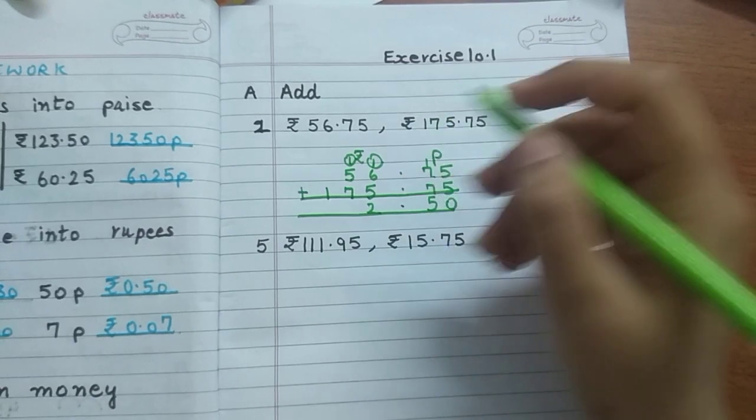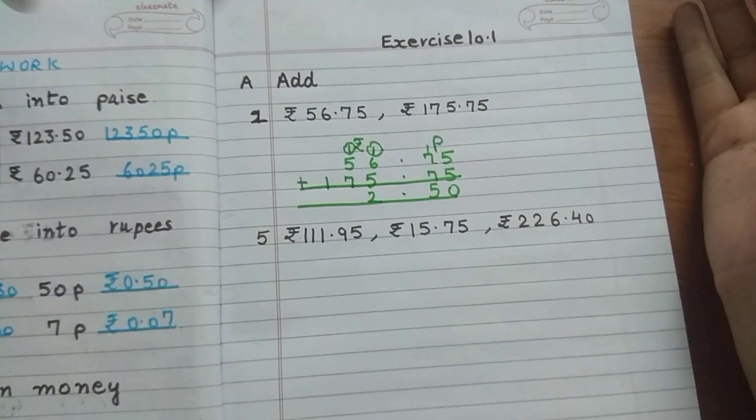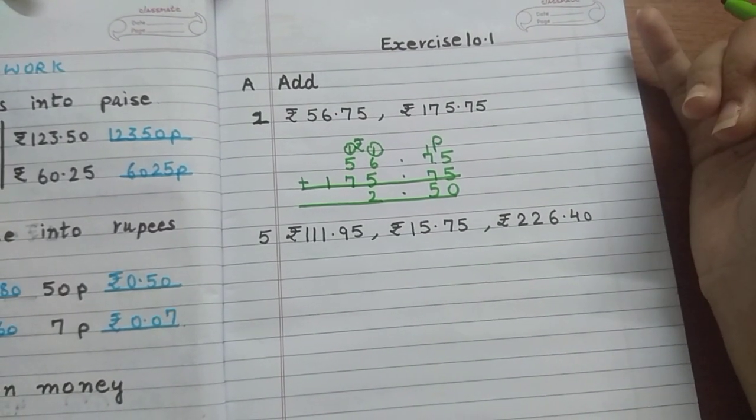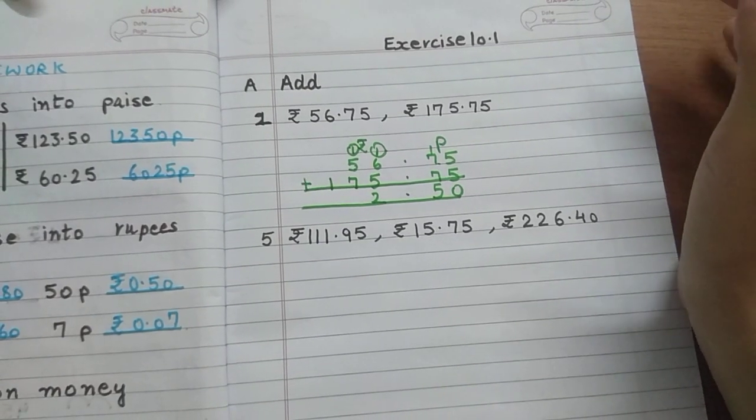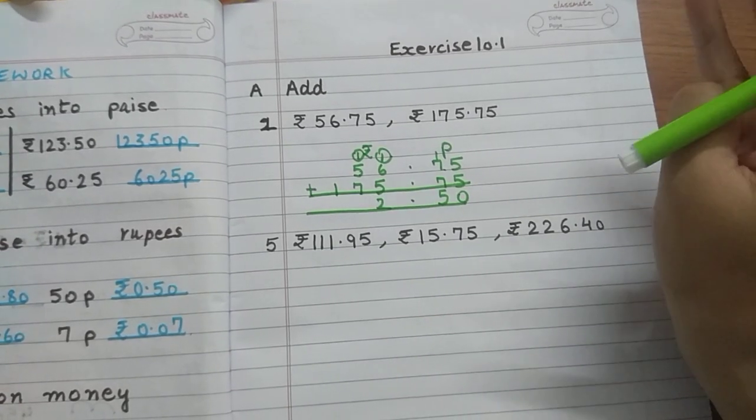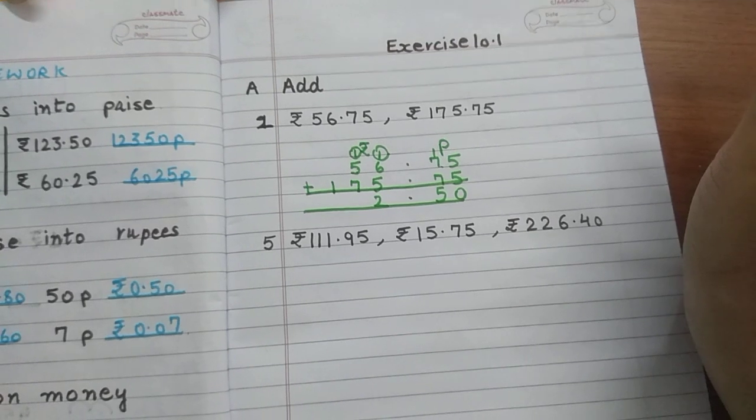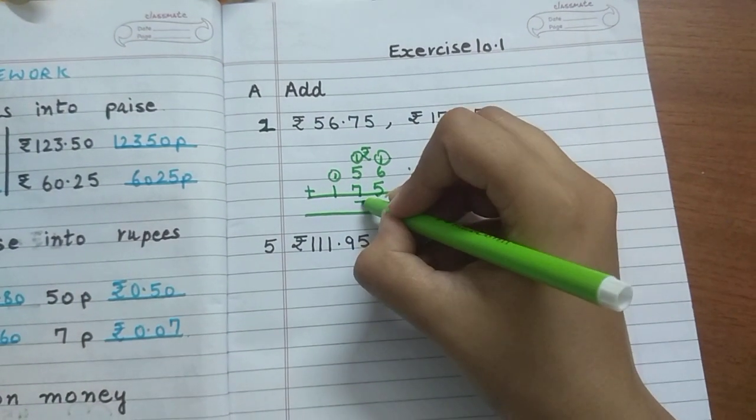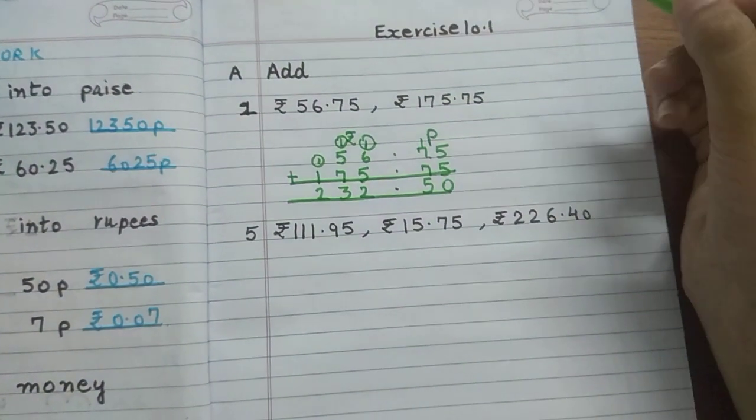Again 5 in the mind, open 7 fingers and count after 5: 6, 7, 8, 9, 10, 11, 12. Plus 1 more, 12 plus 1 is 13. So 1 above, 3 down. 1 and 1 is 2. What is the answer? 232 rupees and 50 paise.